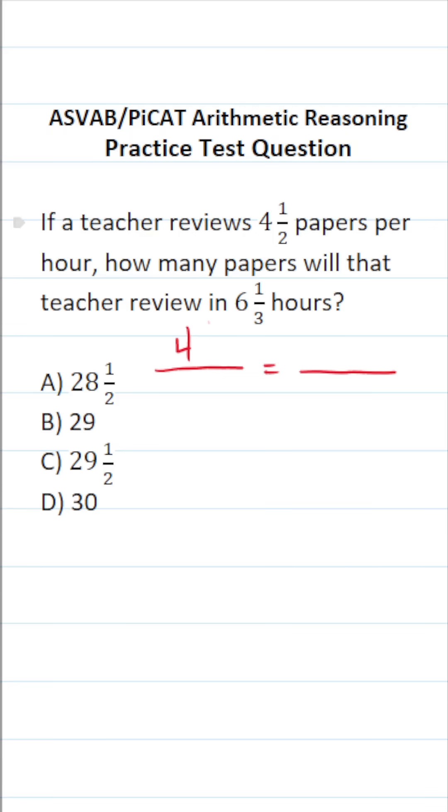We know the teacher can review four and one half papers every hour. That's going to be proportional to or equal to the number of papers they can review. That's unknown, so call it X over six and one third hours.